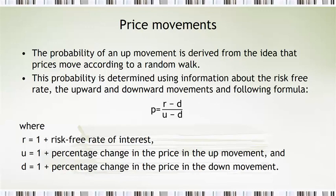d is 1 plus the percentage change in a down movement. u is 1 plus the percentage change in the up movement. And this will come up with a probability. And this is based on a random walk. That is a non-predictable pattern.